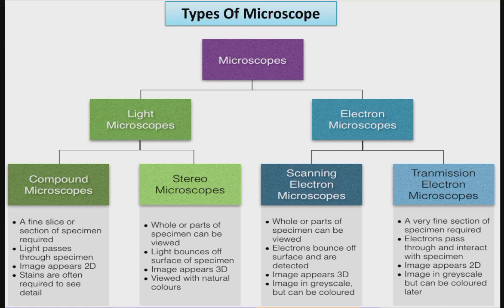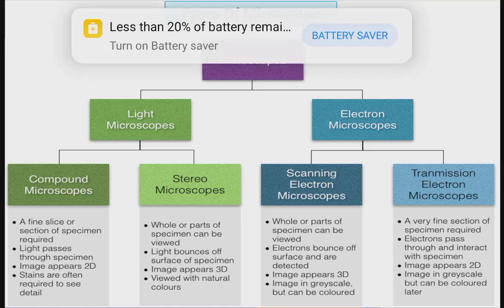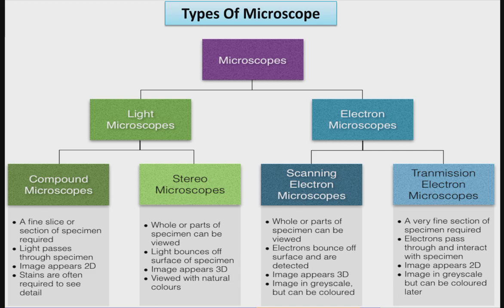In a compound microscope, a fine slice or section of the specimen is required, light passes through the specimen, the image appears 2D, and stains are often required to see detail. In a stereo microscope, the whole or part of the specimen can be viewed, light bounces off the surface, the image appears 3D, and it is viewed in natural color.